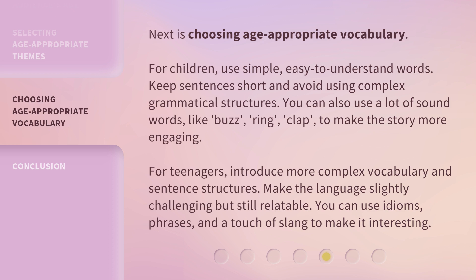For children, use simple, easy-to-understand words. Keep sentences short and avoid using complex grammatical structures. You can also use a lot of sound words, like buzz, ring, clap, to make the story more engaging. For teenagers, introduce more complex vocabulary and sentence structures.